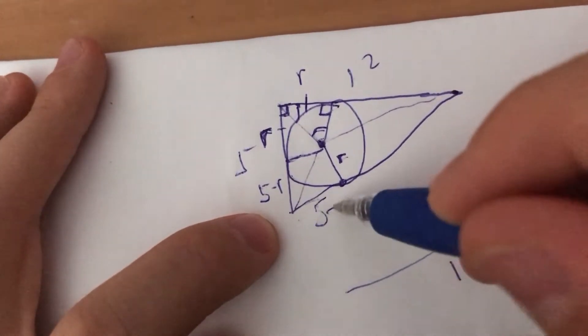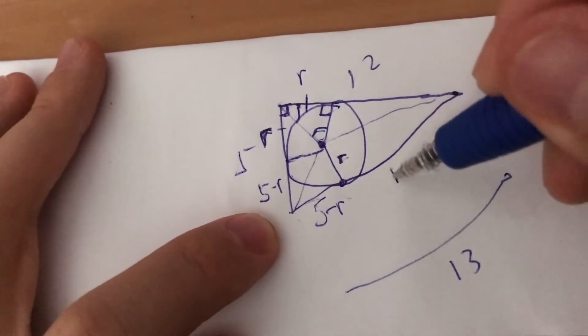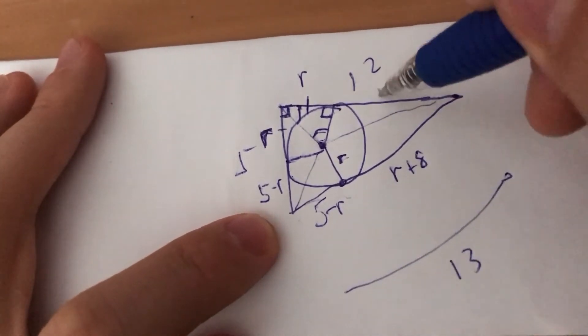And because this adds up to 13, this will be R plus 8. And these are equal, so this is R plus 8.